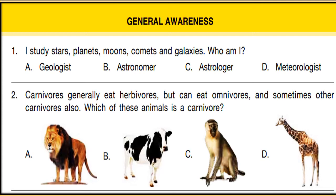Question 2: Carnivores generally eat herbivores but can eat omnivores and sometimes other carnivores also. Which of the given animals (options A, B, C, D) is a carnivore? You have to choose which animal is a carnivore from the options provided.